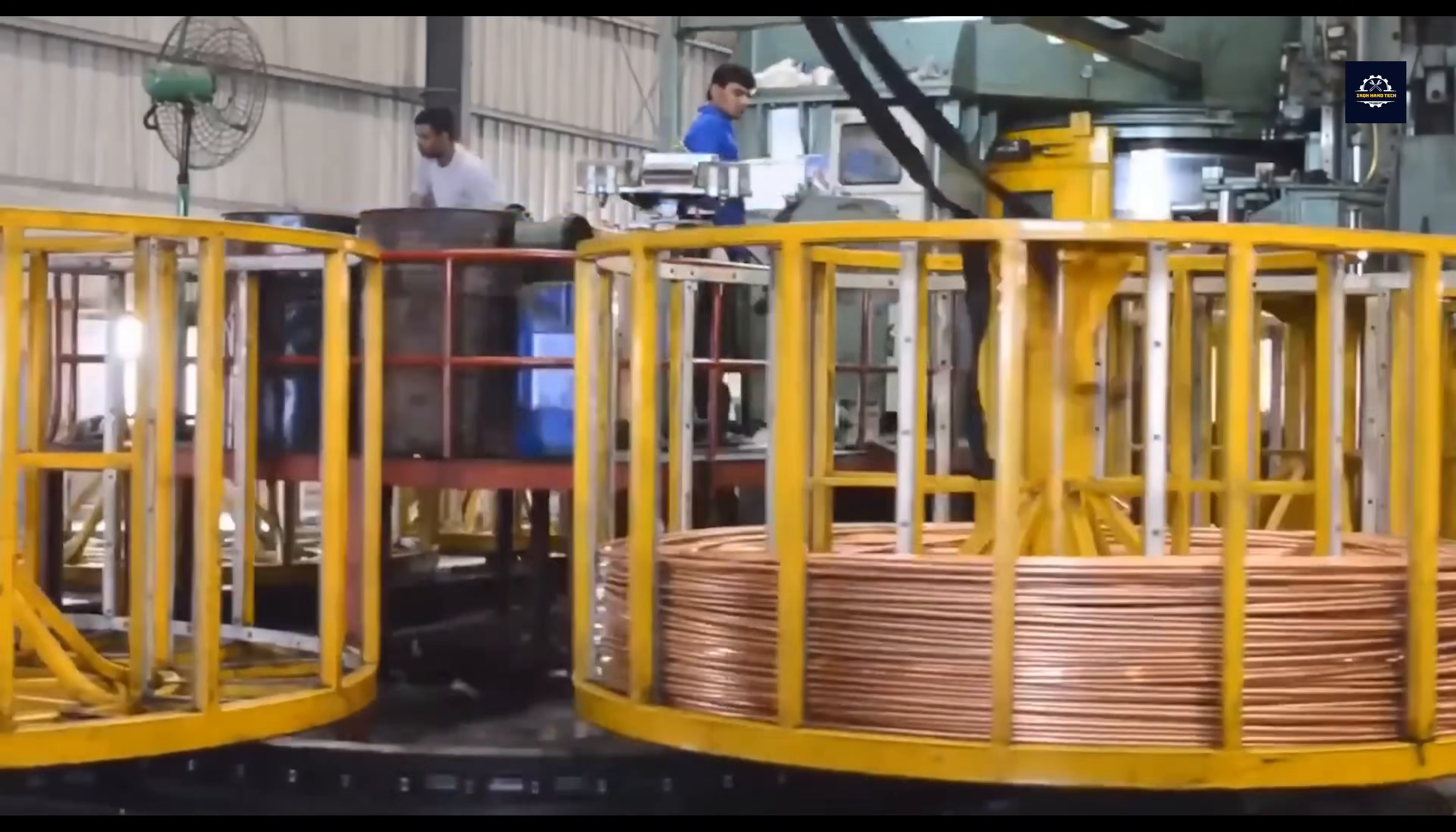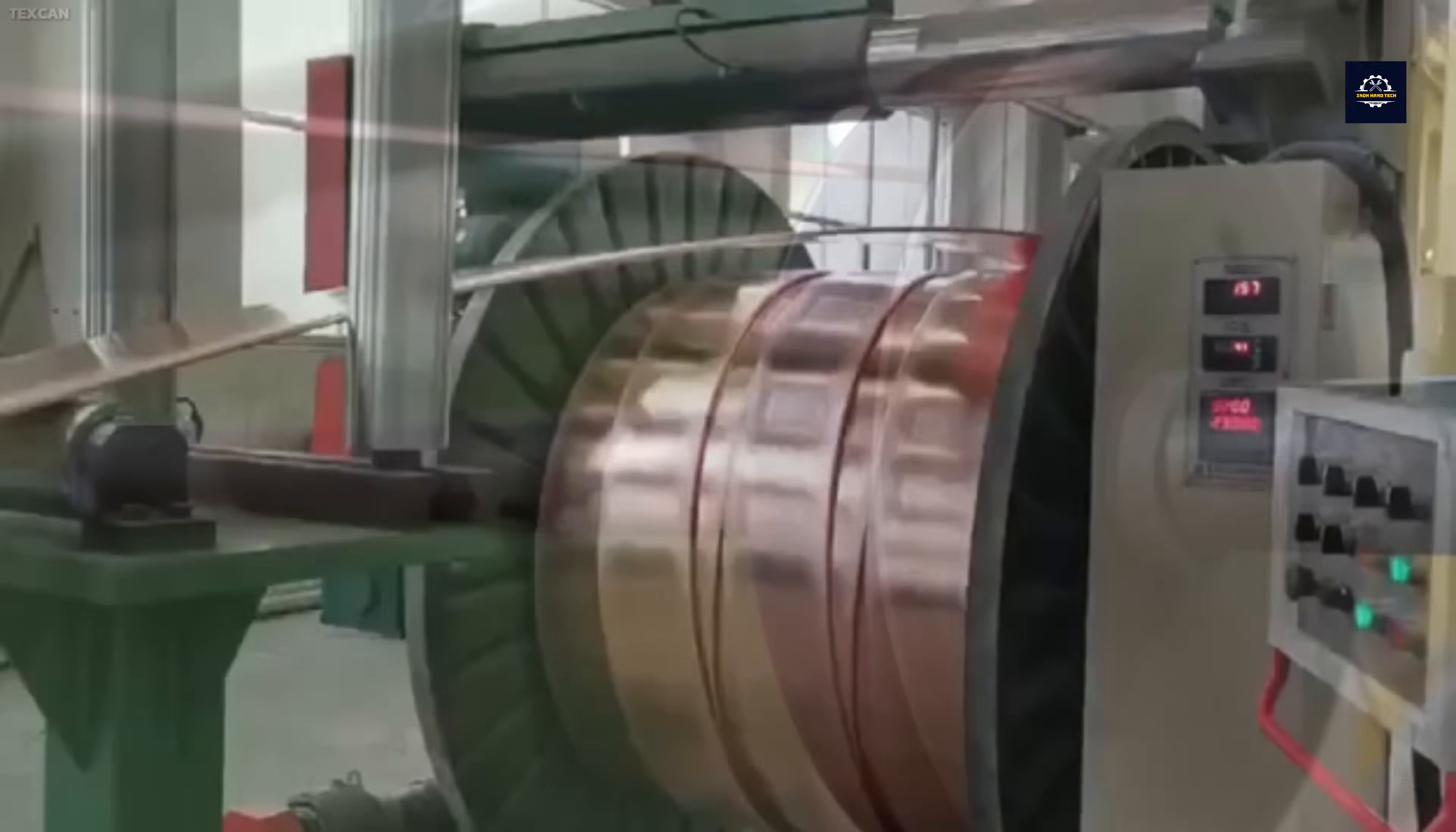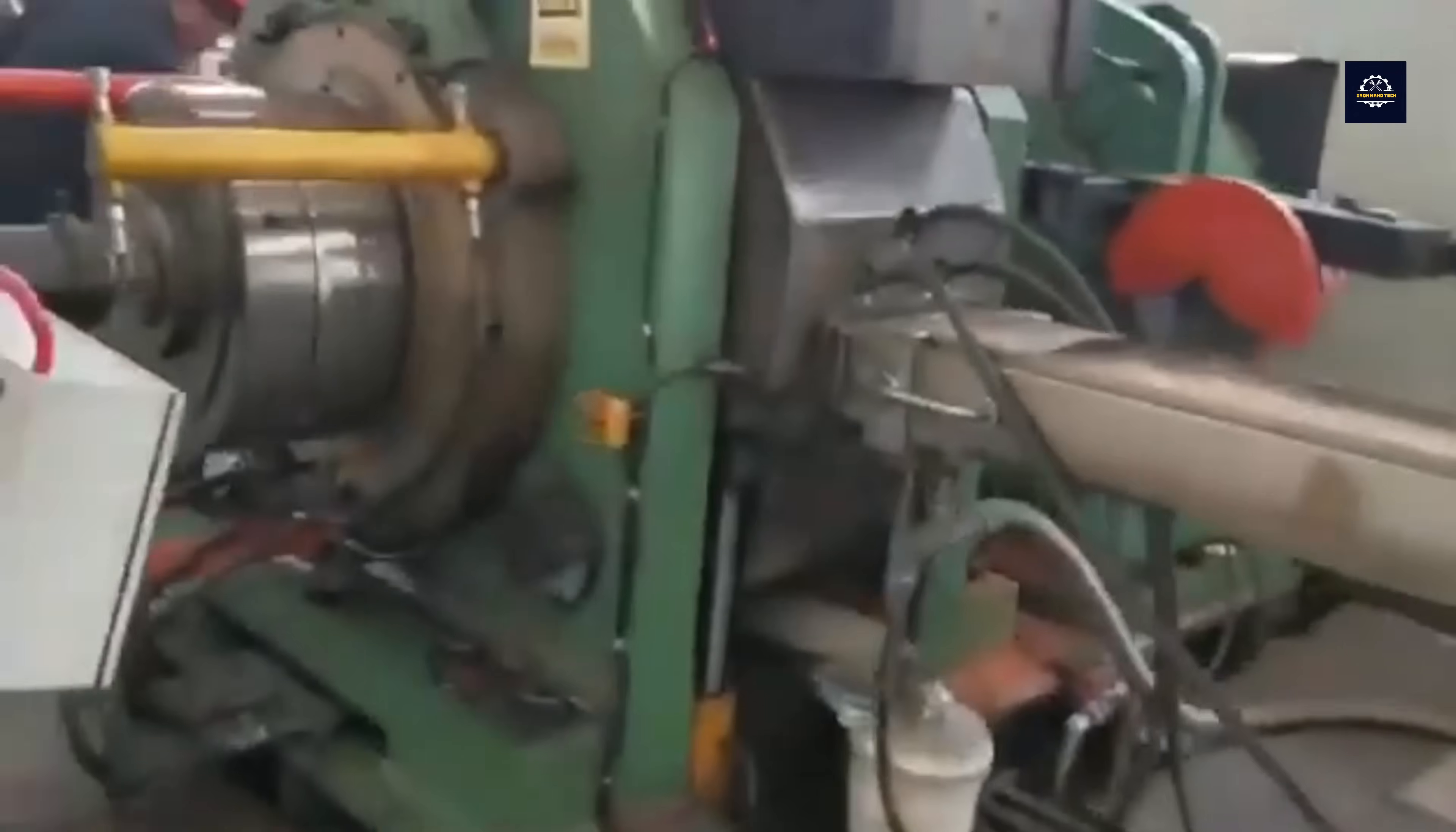To turn the copper into wires, a wire drawing machine is used. The machine features a special die with multiple circular holes that gradually decrease in size. The copper ingot is pulled through these holes, similar to threading a string through a needle. With each pull, the copper's diameter shrinks until it reaches the desired size.